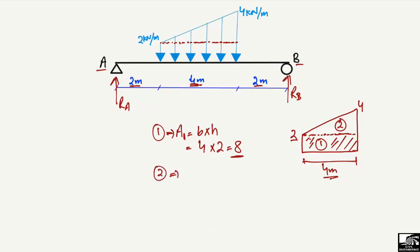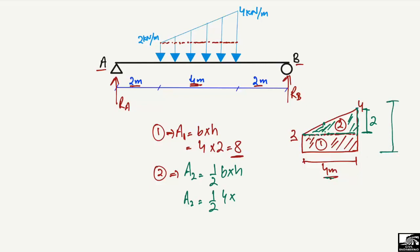For load two, we find the area of the triangle. The area of a triangle is half times base times height. The base is 4 meters, and the height of the triangle is 4 minus 2 = 2 kN/m. So the area is half times 4 times 2, which gives 4 kN. The triangular load is therefore 4 kN.